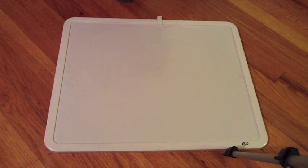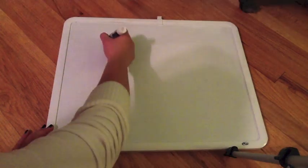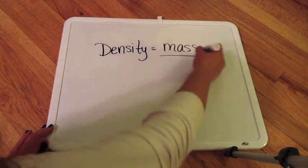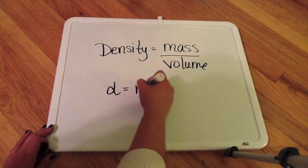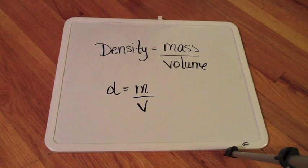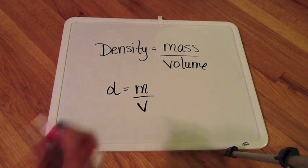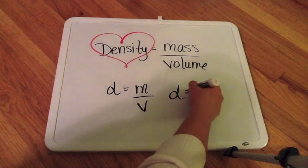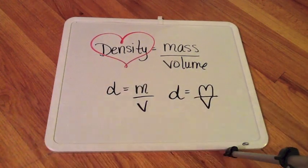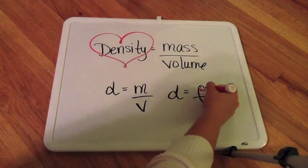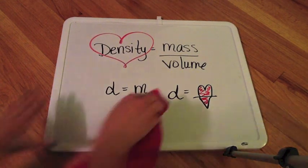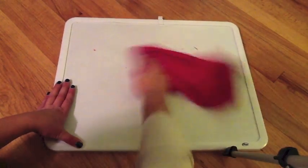Now because density is a quantitative property, of course we have to be able to calculate it. So the formula for density is mass divided by volume, or d equals m over v. And I think the best way to remember this formula is to remember that we love density, because the density formula can kind of look like a heart if you do it correctly. If you put it backwards with the v over the m, you're not going to get a heart. So always remember we love density.